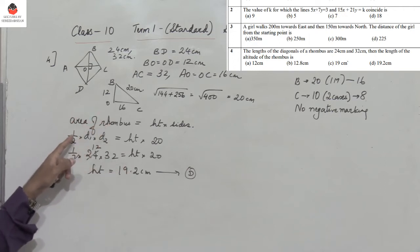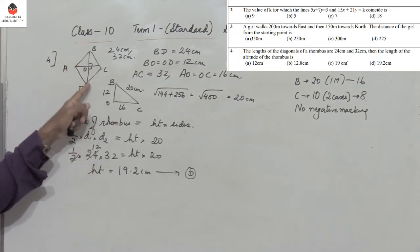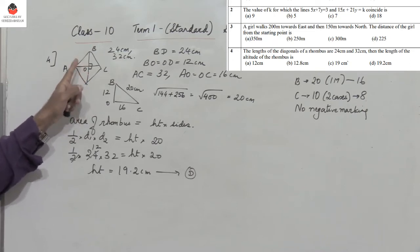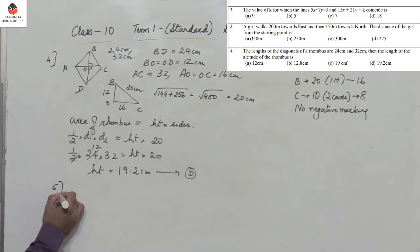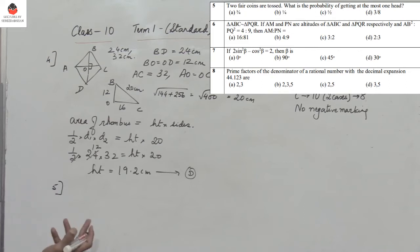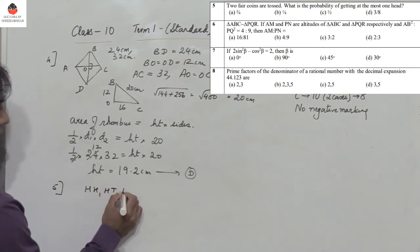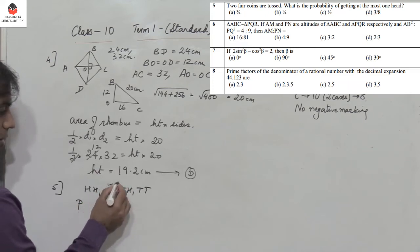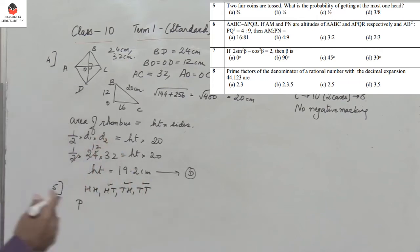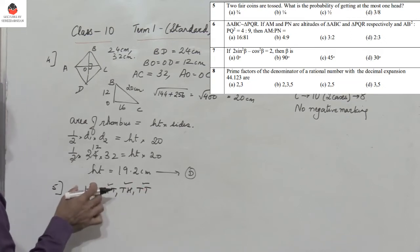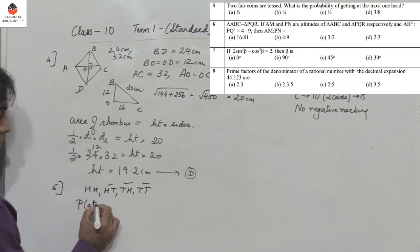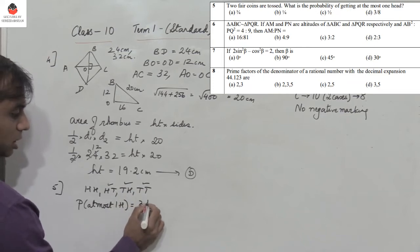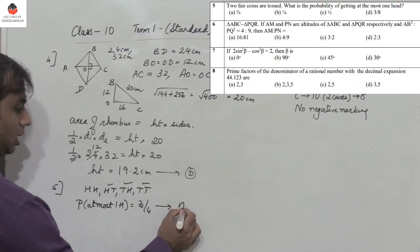Question 5: Two fair coins are tossed. What is the probability of getting at most one head? The sample space is HH, HT, TH, TT — four outcomes. At most one head means maximum one head or no heads, so we exclude HH. Favorable outcomes: HT, TH, TT — three combinations. Probability = 3/4. The answer is option A.